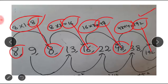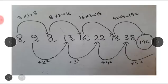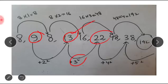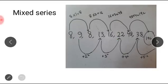So it is confirmed — it is a mixed series. For the even-positioned numbers: 9, 13, 22, 38. The relationship is that we add squares: 9 plus 2² (4) gives 13, then 13 plus 3² (9) gives 22, then 22 plus 4² (16) gives 38. If we want to continue, 38 plus 5² (25) gives 63. Our answer is 192.